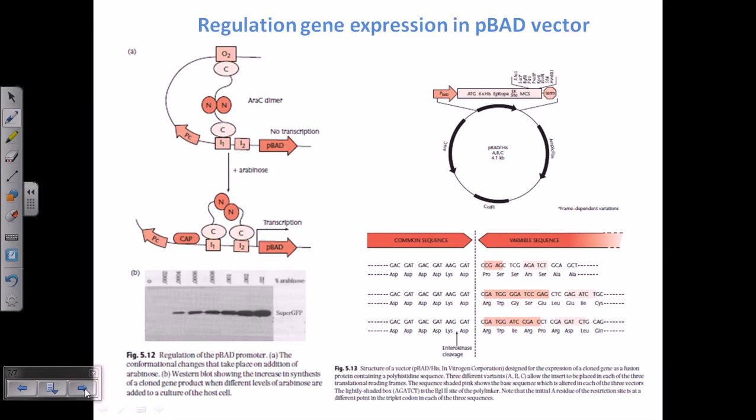Now regulation of gene expression in P-Bad vector. We have seen the regulation using Lac operon. We have seen the regulation using tryptophan operon. Now let us see the regulation using Arabinose operon, and all of these three different operons are the most important operons to study.